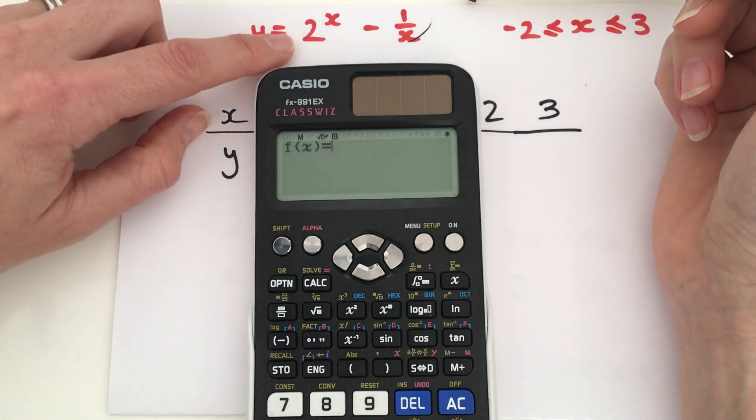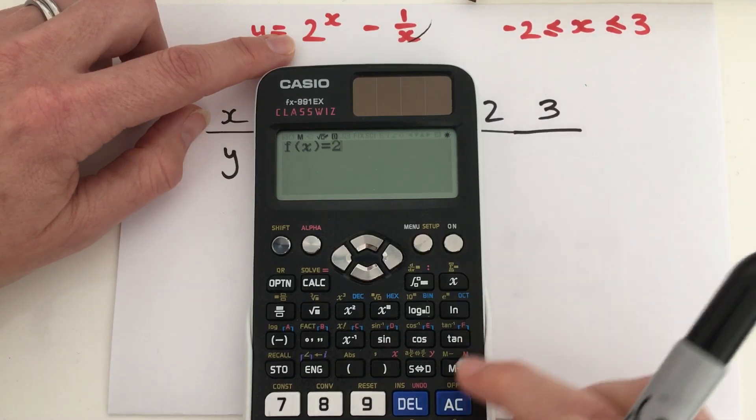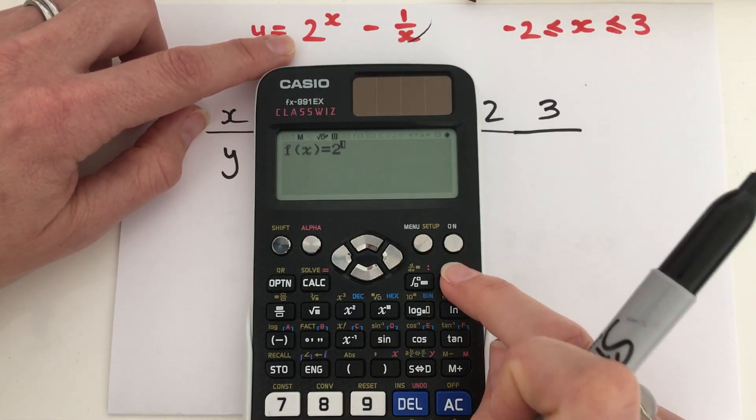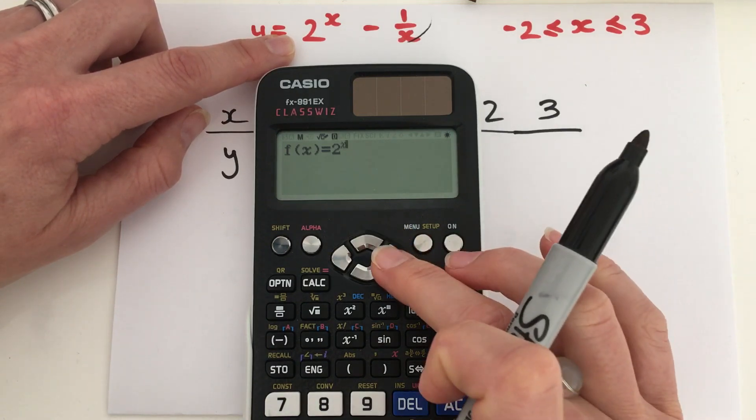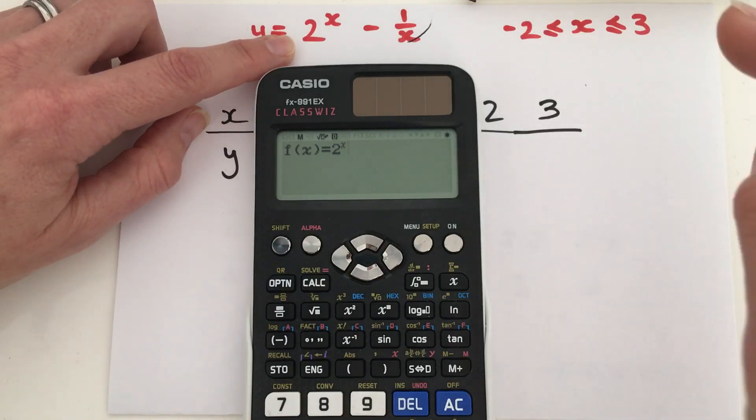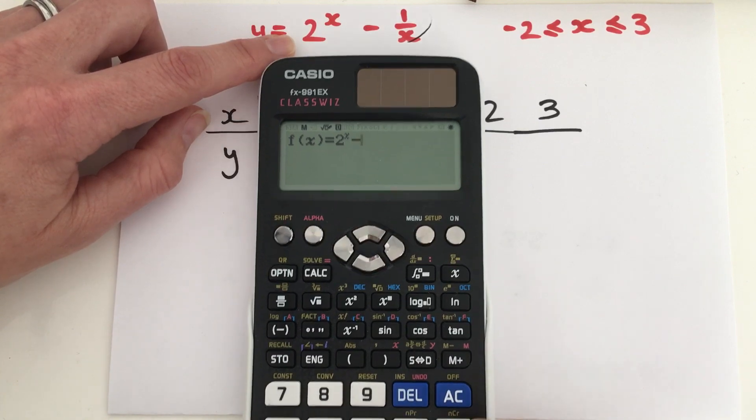So we need to input 2 to the power x. So, we're going to put in a 2, we're going to press the power key, and then we're going to put an x. There's an x on your calculator here, so we're going to press that. Then we're going to arrow across, because if we didn't, it would continue to keep writing where the x is, which is in the power.